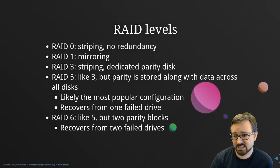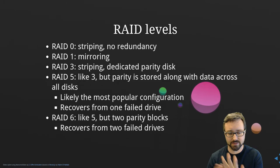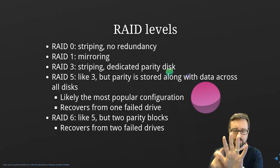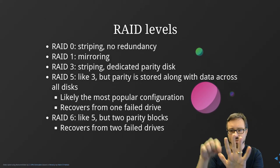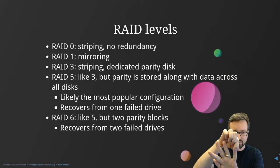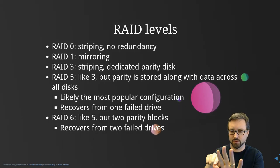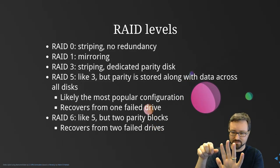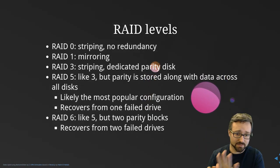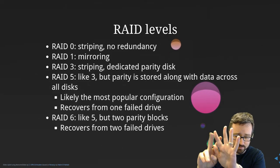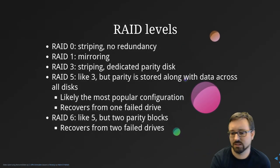RAID 6 is like RAID 5 but with two parity blocks, meaning you can recover from two failed drives. For example, with five disks the data and two parity blocks are distributed across all of them in alternating fashion. Because you have two parity bits, losing any two hard drives still allows you to recover all the information.